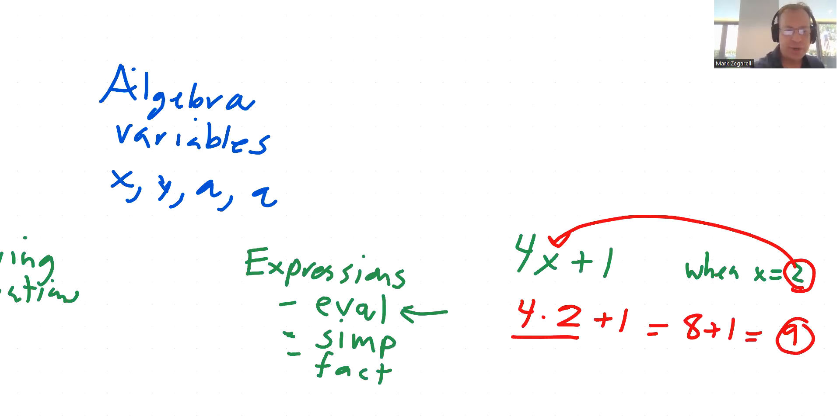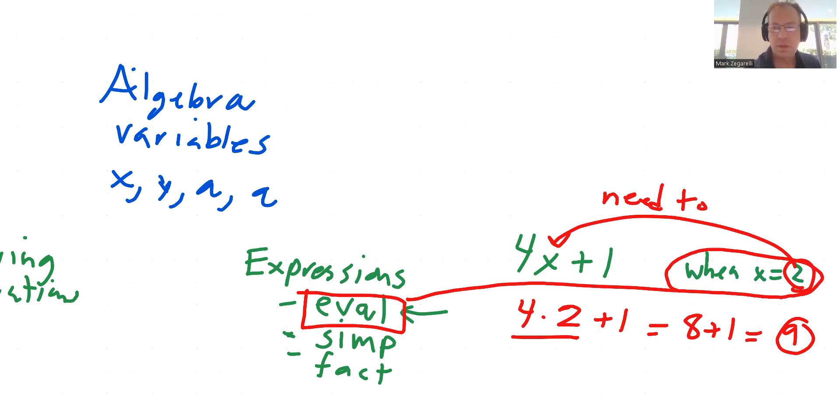When we're evaluating, we need to know what x is. We need to know the value of the variable, or variables - there could be more than one. We need to know the value of the variable in order to evaluate.